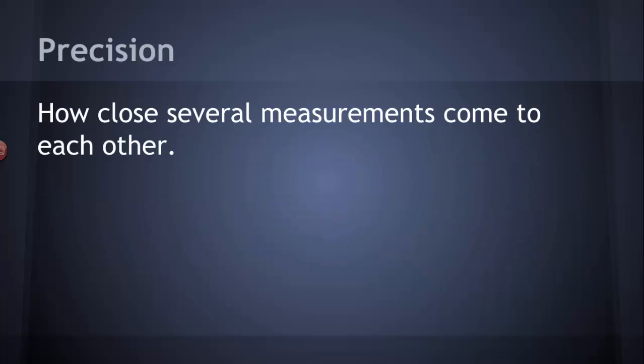Precision, on the other hand, has to do with several measurements. And the definition of precision is how close several measurements come to each other. Notice, it doesn't say anything about the right answer. It just talks about how close the measurements are to one another.